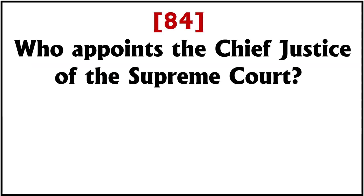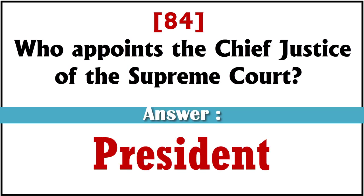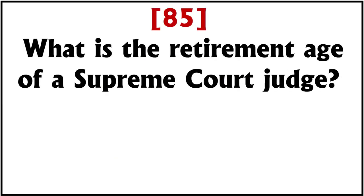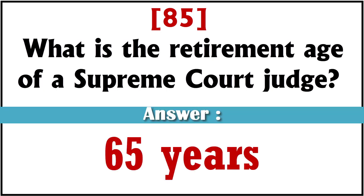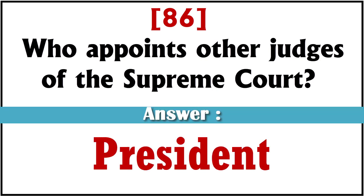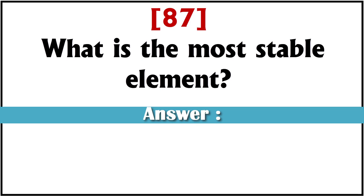Who appoints the Chief Justice of the Supreme Court? The President. What is the retirement age of a Supreme Court judge? 65 years. Who appoints the other judges of the Supreme Court? The President. What is the most stable element? Lead.